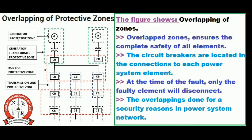The various components of the protective zones include generators, transformers, busbars, transmission lines, cables, and so on. There is no part that has no protection in the power system. In practice, these zones overlap to ensure the complete safety of all elements of the system. The part of the system which is unprotected is known as a dead spot or blind spot. To avoid dead spots, we use overlapping of zones, as shown in the diagram.